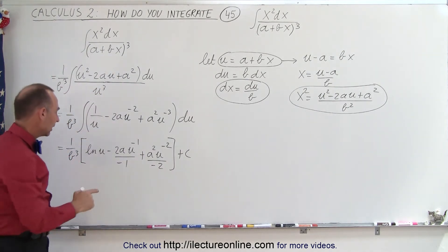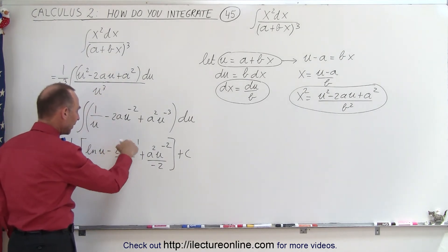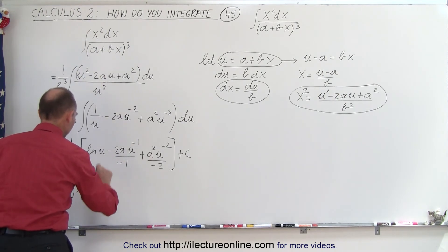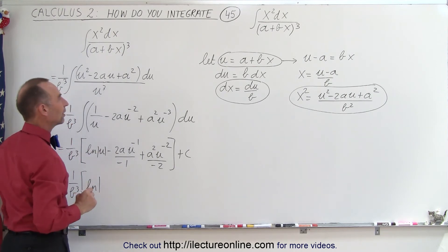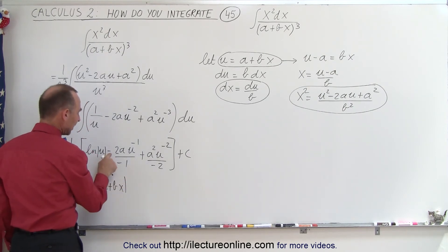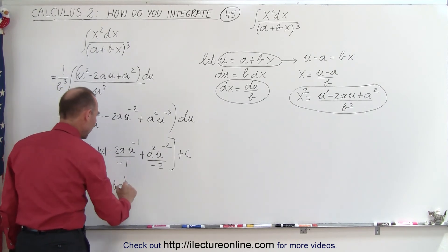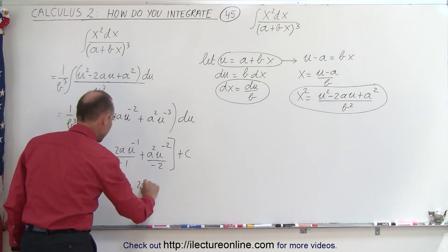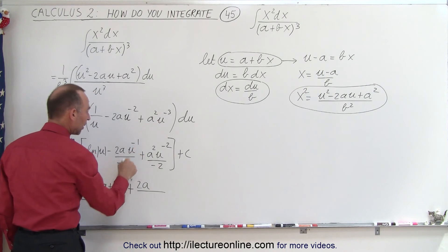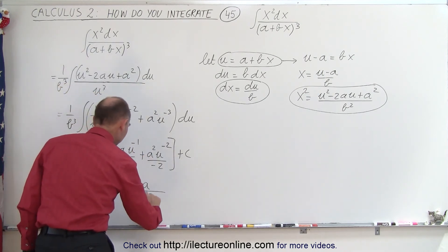Then, if we plug in what u is equal to and simplify this a little bit, we get 1 over b cubed times the natural log of, and let's put absolute value signs around that, a plus bx. Now, here we have a negative 1 times the negative becomes positive, so that becomes plus 2a divided by, because this goes into the denominator, u to the first power becomes a plus bx.